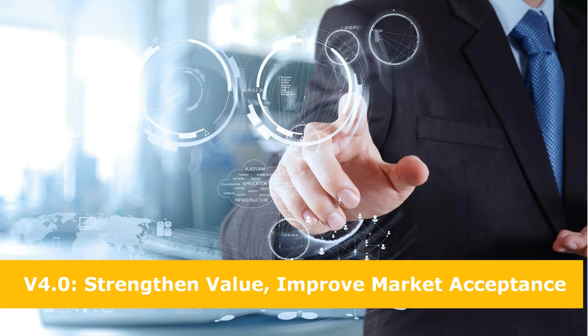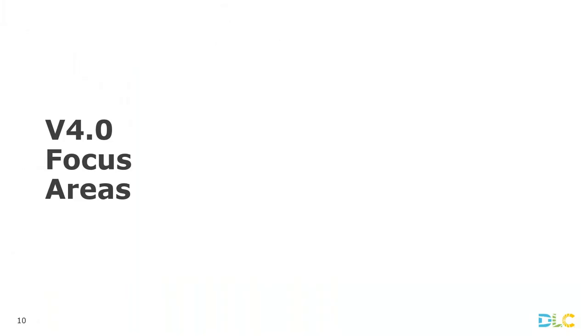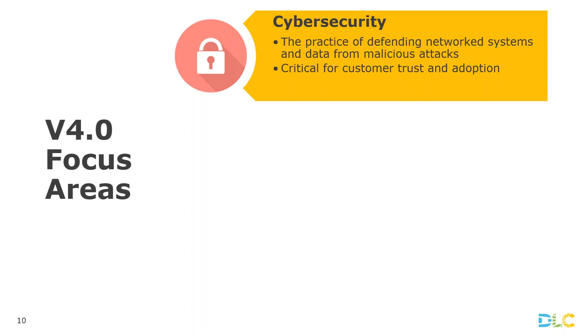The overall objectives of this version 4.0 revision are: number one, to strengthen the value proposition of network lighting controls technology; and number two, to address some of the key issues needed to improve market acceptance and uptake — working toward a goal to accelerate adoption, market uptake, and energy savings. We have focused on three topics aligned with these objectives. The first is cybersecurity: the practice of defending network systems and data from malicious cyber attacks. It's absolutely critical to address for customer trust and adoption of this technology.